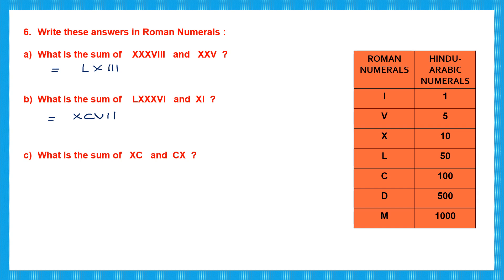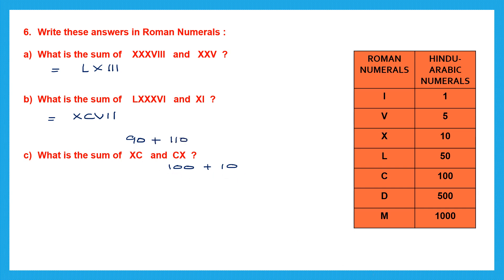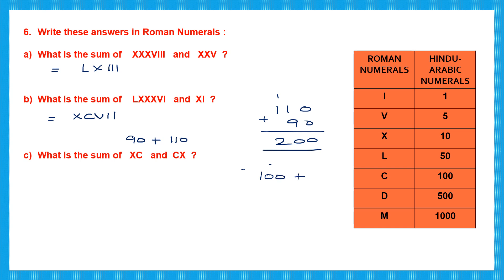Next: XC is 100 minus 10 equals 90, and CX is 100 plus 10 equals 110. Sum of 90 plus 110 is 200. We write 200 as CC.